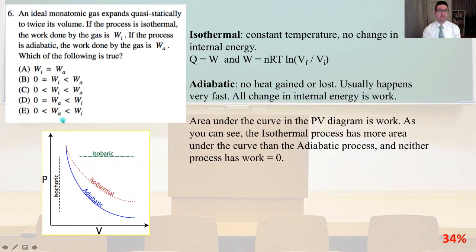Number six. An ideal monatomic gas expands quasi-statically to twice its volume. If the process is isothermal, the work done by the gas is Wi. If the process is adiabatic, the work done by the gas is Wa. Which of the following is true?